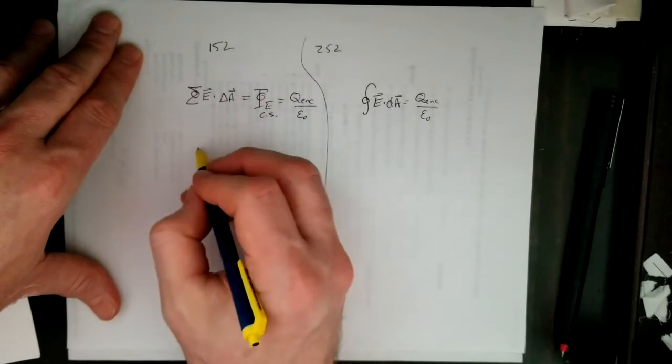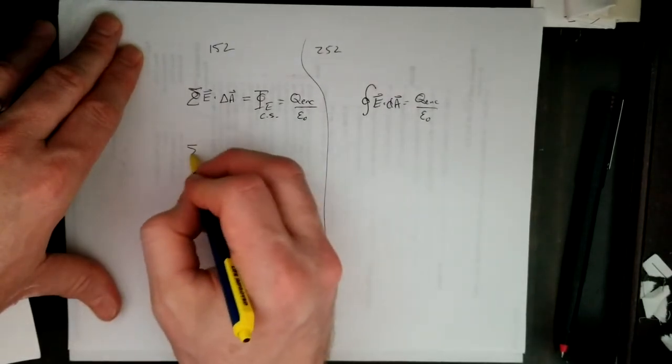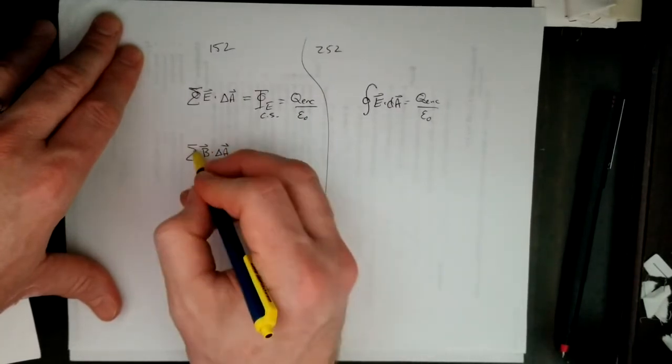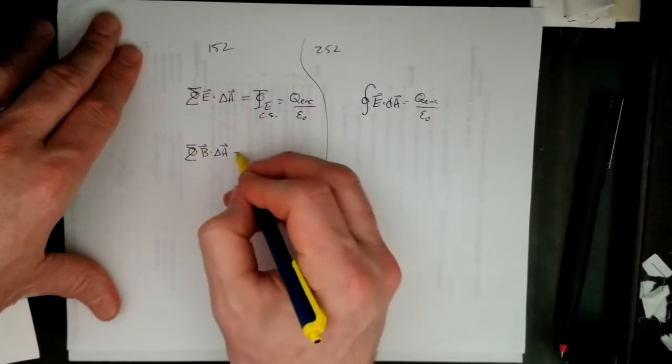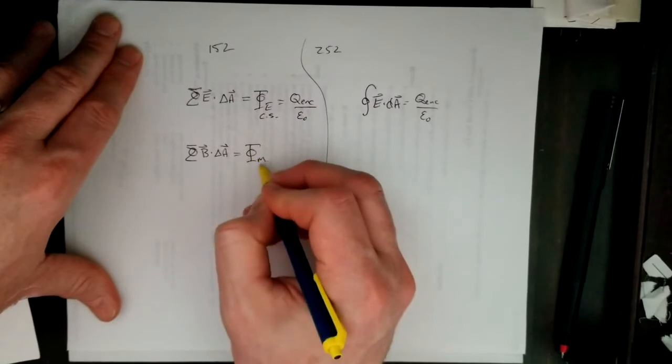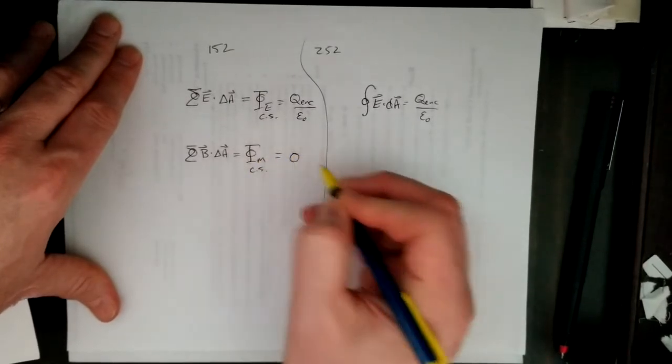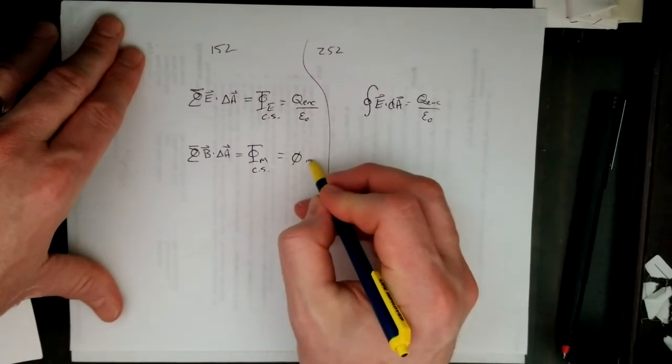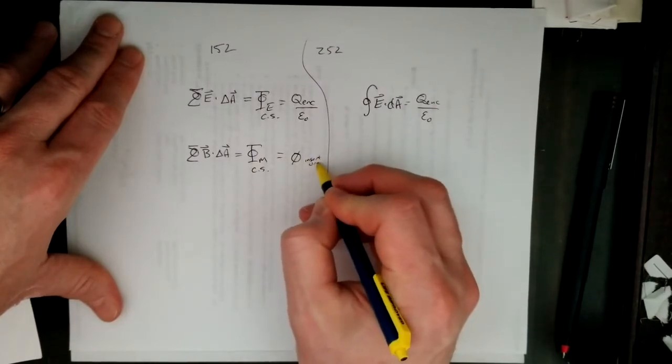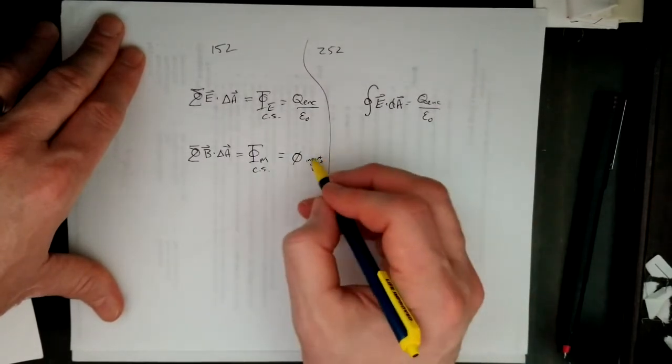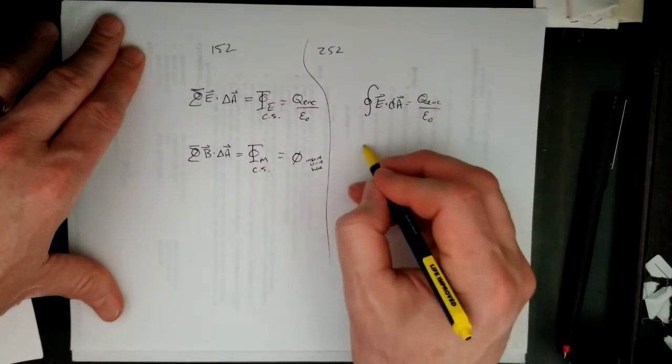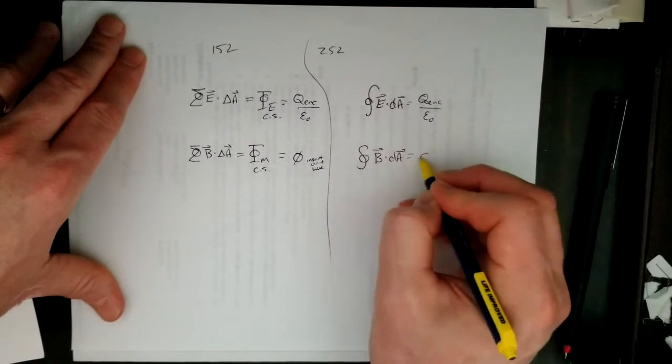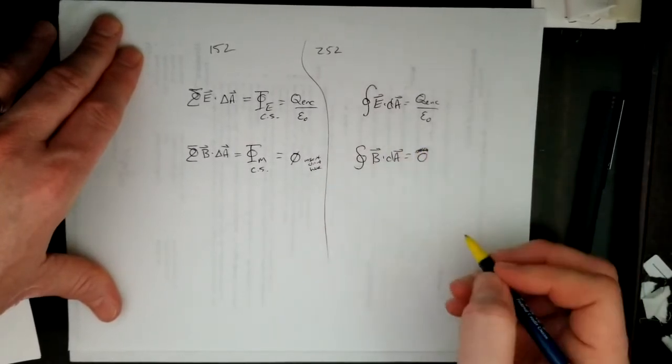We also have the sum of b dot delta A around a closed surface. In other words, the magnetic flux through a closed surface is equal to zero in whatever unit system. Insert unit here. I guess Weber's in SI units. Or integral of b dot dA is equal to zero. Sorry, dot product. That doesn't go there.